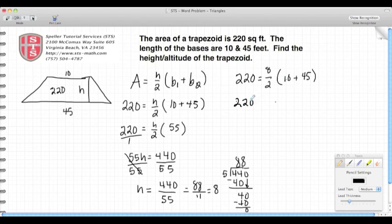Here I have 220 is equal to 8 divided by 2, which is 4. And then 10 plus 45 is 55. Rewrite my 220 on the left hand side, and now I need to evaluate this 55 times 4. Well, 5 times 4 is 20. 5 times 4 again is 20, plus that 2 is 22. So I see that both sides of my expressions are equal, so I know that I did my problem correctly.